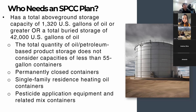For example, a 35-gallon drum of hydraulic oil on site does not get included in your total storage capacity. Also not included are permanently closed containers — if you have a 5,000-gallon red-dyed diesel tank that's been decommissioned, properly closed out, and emptied, that amount won't be included in your total above-ground storage. The only time we mention those decommissioned tanks is if you still need an SPCC plan, and the plan will specifically note the tank has been decommissioned with a date. Also not considered: single-family residences using heating oil containers, and pesticide application equipment and related mixed containers.